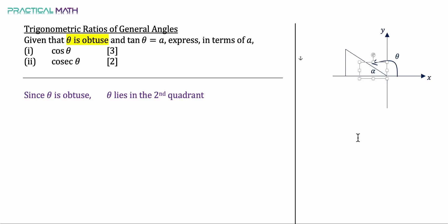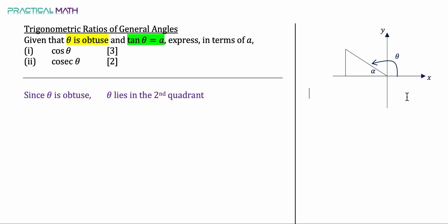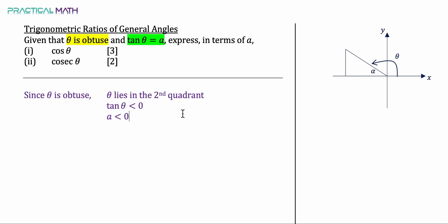The question also states that tangent theta equals A. Since theta lies in the second quadrant, by the CAST method, only sine is positive in the second quadrant, so tangent must be negative. Therefore, tangent theta is less than zero, meaning A must also be negative.